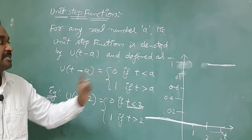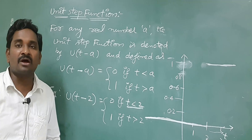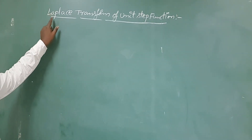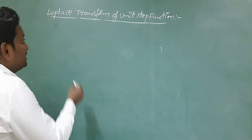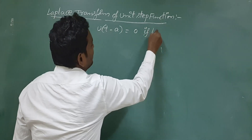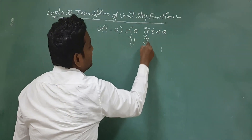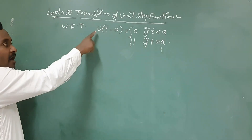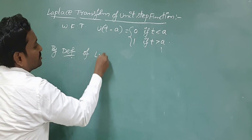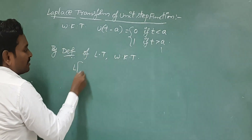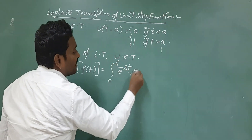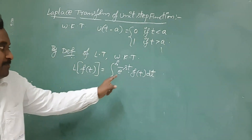Now we are going to find out the Laplace transformation of this type of unit step function. Our aim is to find L{u(t - a)}. By the definition of Laplace transform, L{f(t)} equals the integral from 0 to infinity of e^(-st) · f(t) dt, where s is a parameter — either a real number or a complex number.